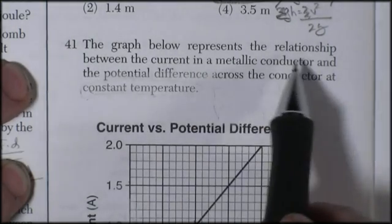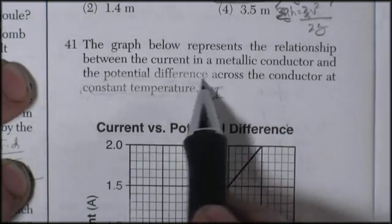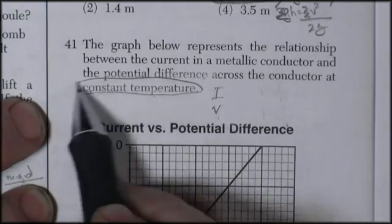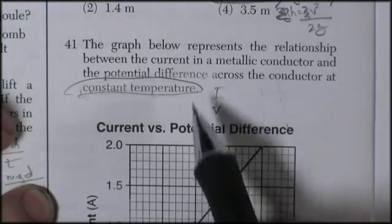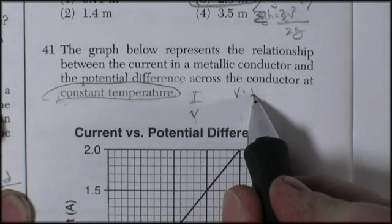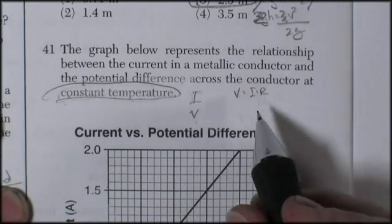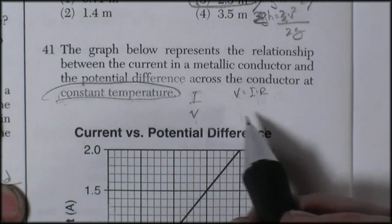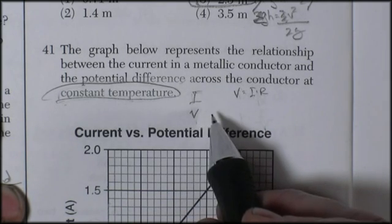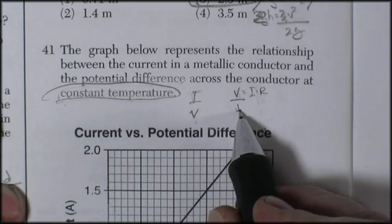Question 41. The graph represents the relationship between the current of a metallic conductor and the potential difference, or the voltage across the conductor, at a constant temperature. And constant temperature implies that it's a constant resistance. Now, Ohm's law tells you that voltage is equal to current times resistance. Here's where I made my mistake. I wrote down the wrong formula there.